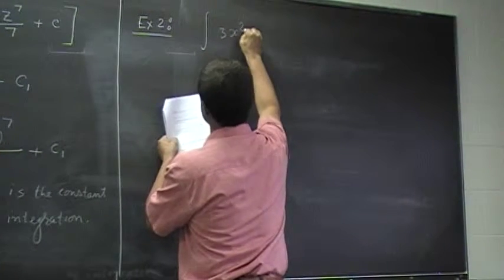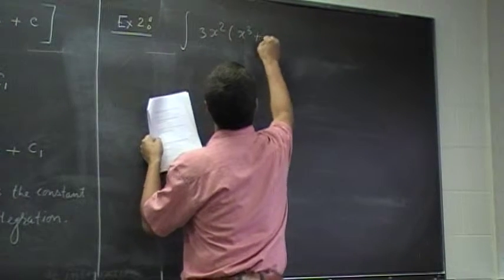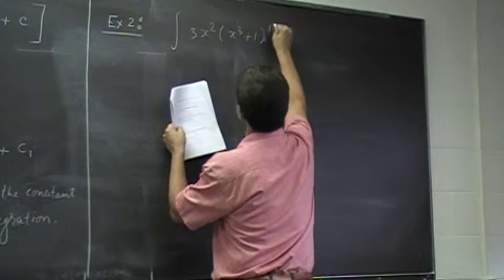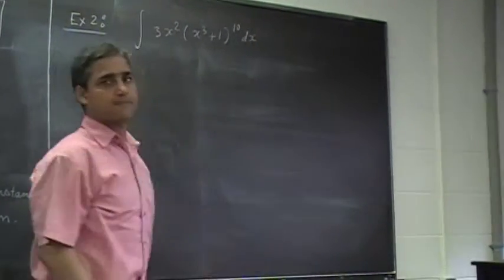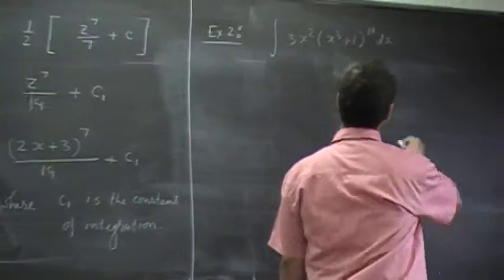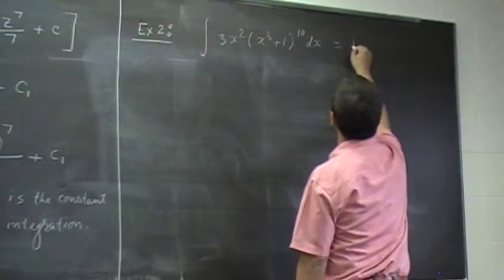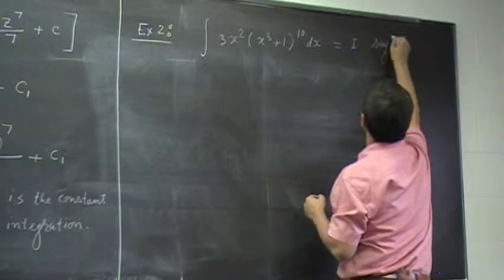Let's work on this problem: integral of 3x squared (x cubed plus 1) to the 10 dx. We want to integrate it. Okay. I don't want to repeat that big expression, let me say I.